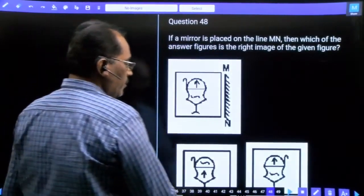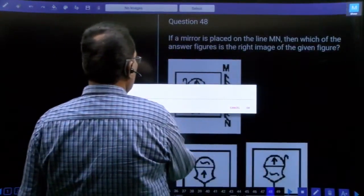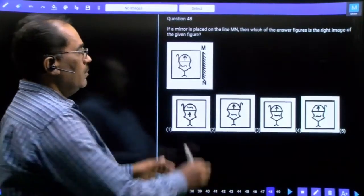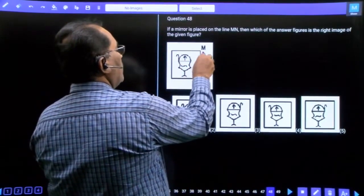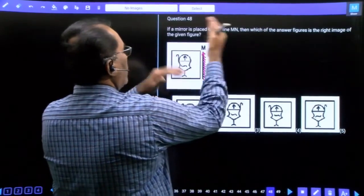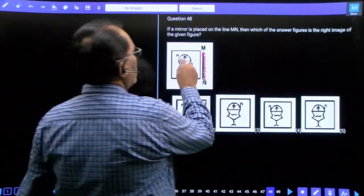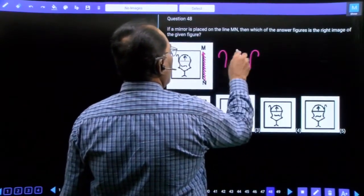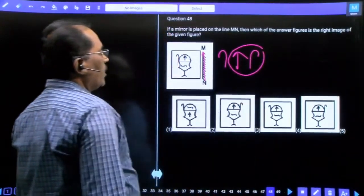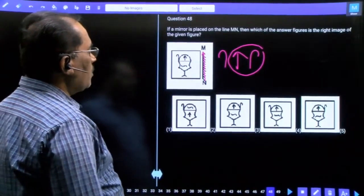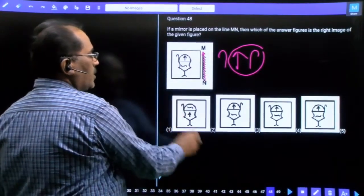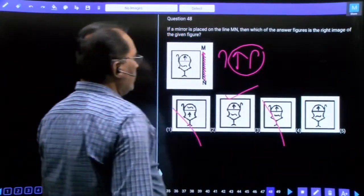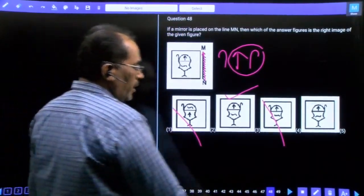Question 48, this is mirror reflection. Mirror means lateral reverse, left and right reverse. Our option is left to right reverse. This is the perfect answer, second option.